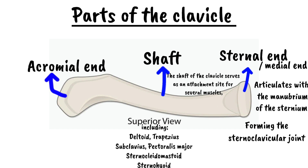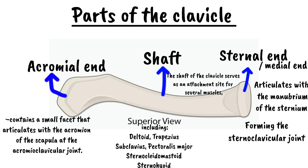Moving over to the acromial, also the lateral end: the lateral end of the clavicle contains a small facet that articulates with the acromion of the scapula as the acromioclavicular joint. It also provides an attachment point for the coracoclavicular ligament, which suspends the weight of the upper limb from the clavicle.